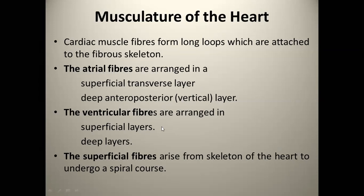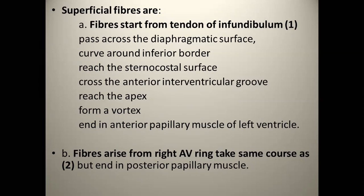Ventricular fibres are arranged in superficial and deep. Superficial fibres arise from the skeleton of the heart and undergo a spiral course. Fibres start from the tendon of infundibulum, pass across the diaphragmatic surface, then curve around the inferior border.